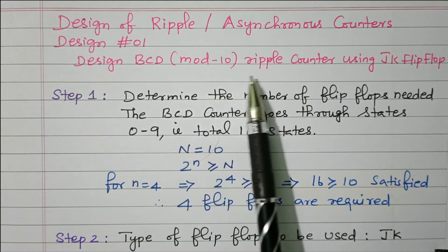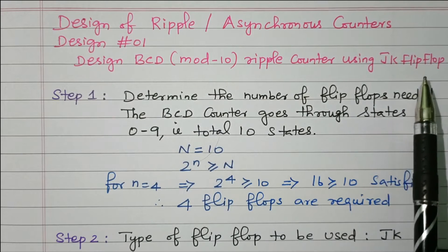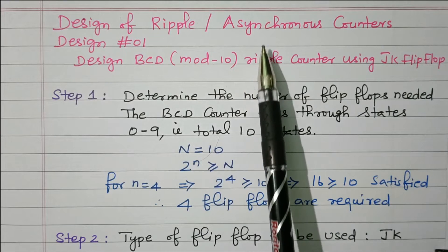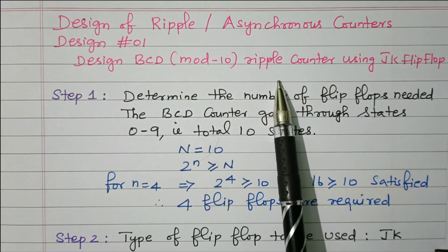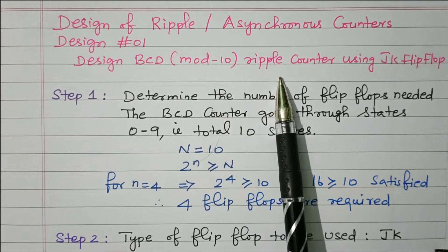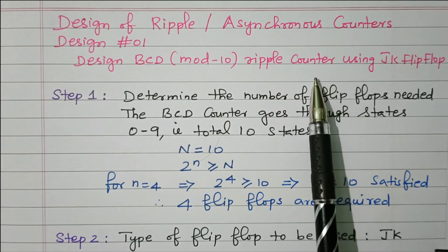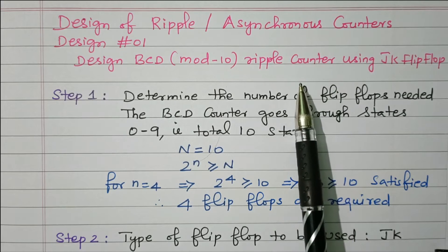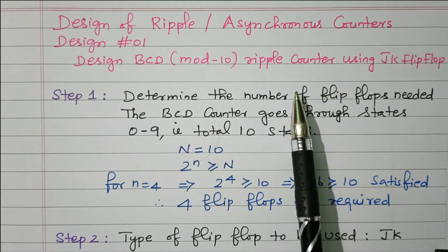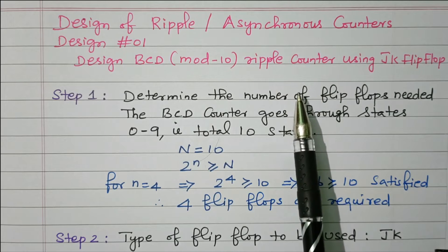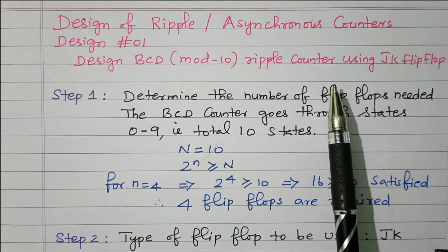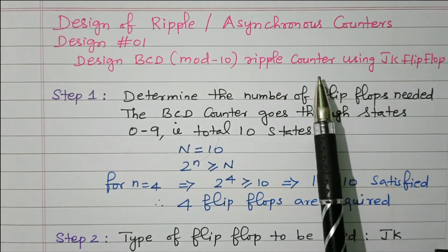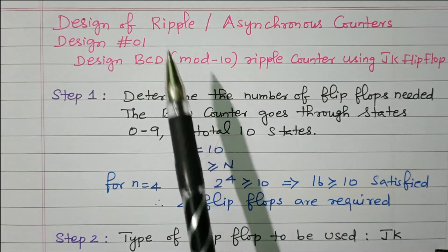The first design is BCD mod-10 ripple counter using JK flip-flop. This ripple or asynchronous counter means the operation is not synchronized. In a synchronous counter, all flip-flops receive the same clock pulse. In an asynchronous counter, only the first flip-flop receives the clock pulse; the output of the first flip-flop is given as the clock pulse to the second flip-flop. So the operation is not synchronized, which is why it is called asynchronous, also called ripple.